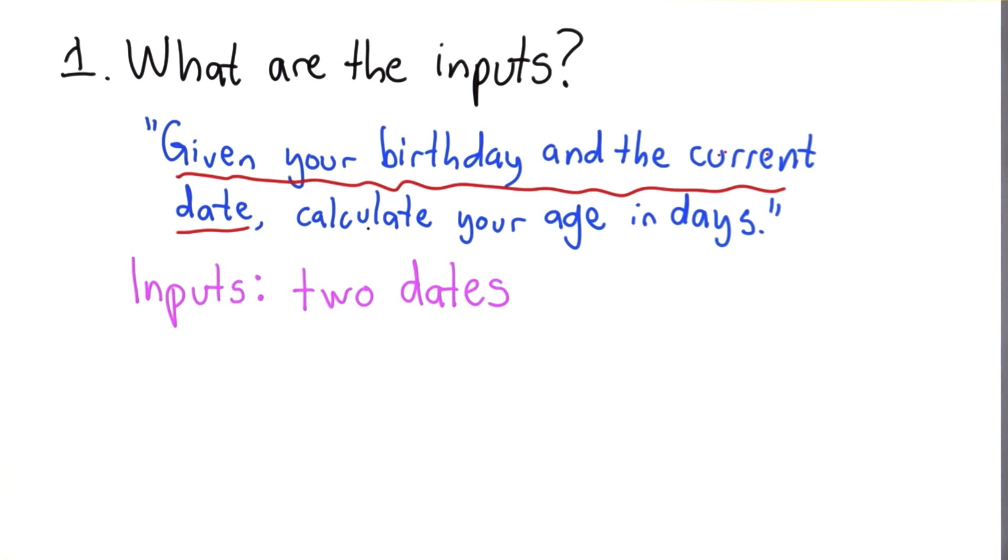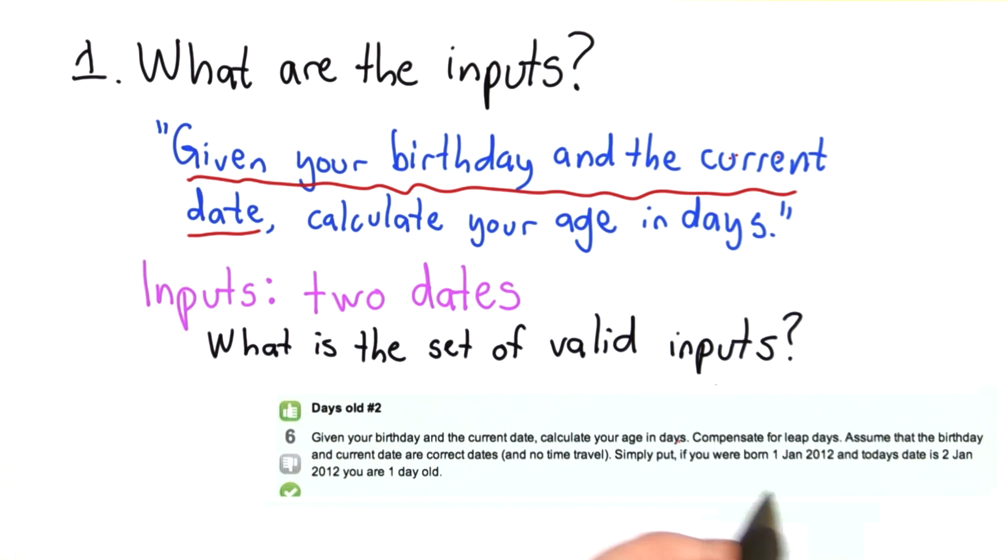We need to think a little more carefully to know if they're all valid. Well the statement of the question gave us a good clue here. It said assume that the birthday and the current date are correct dates, and no time travel. This probably is a valid assumption if we're talking about birthdays and current dates. If we're comparing any two dates, well this says that the second date needs to be after the first one. Assumptions like this make life easier for programmers. They mean it's easier to write our code since it has to work for fewer possible inputs.